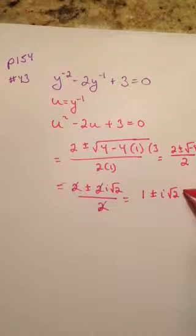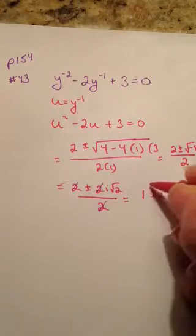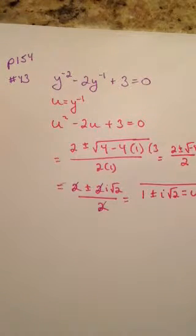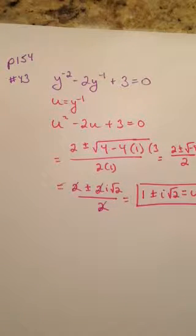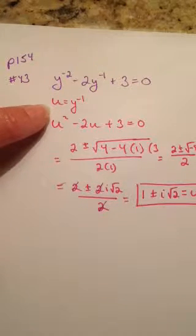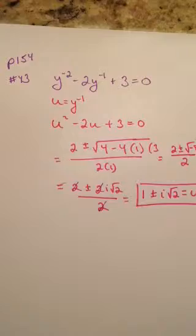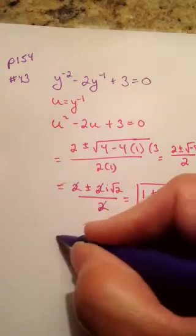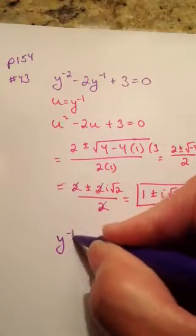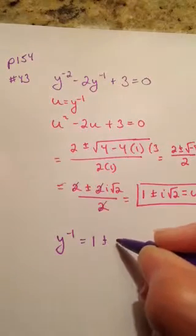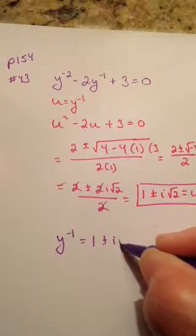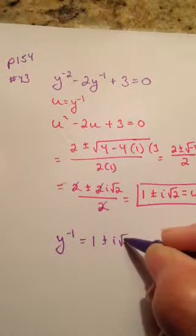It's very important to notice that we solved for the variable u. So now I'm going to go back in and resubstitute — this u right here. So I can simply say y to the negative 1 equals 1 plus or minus i root 2.